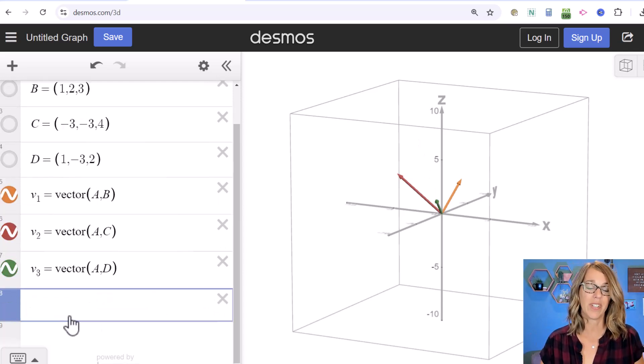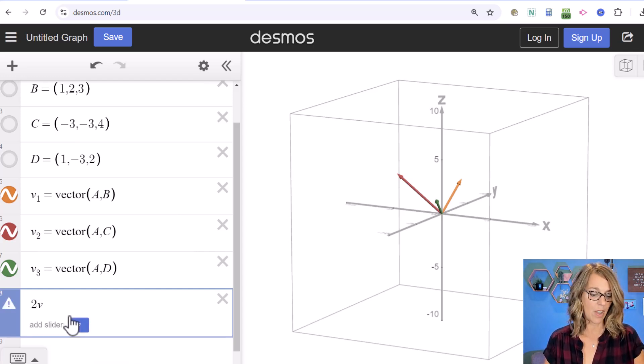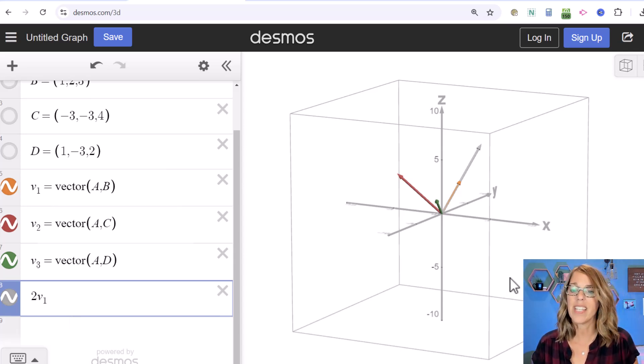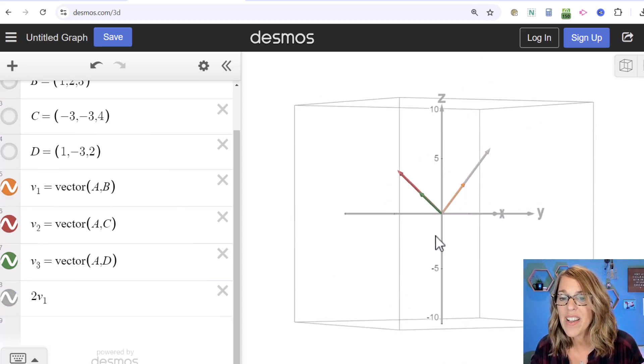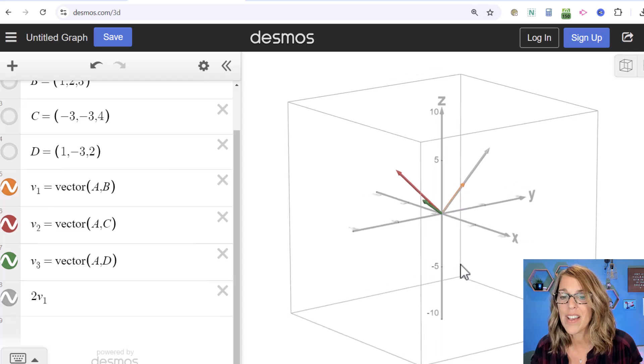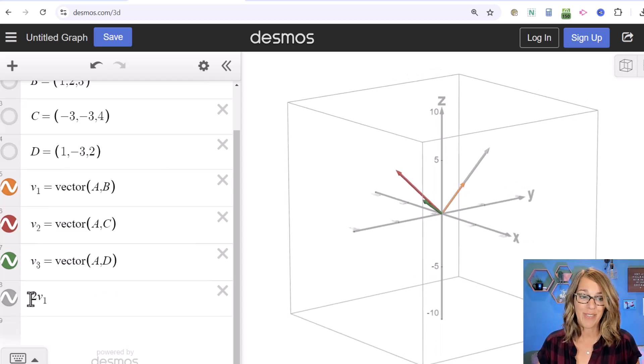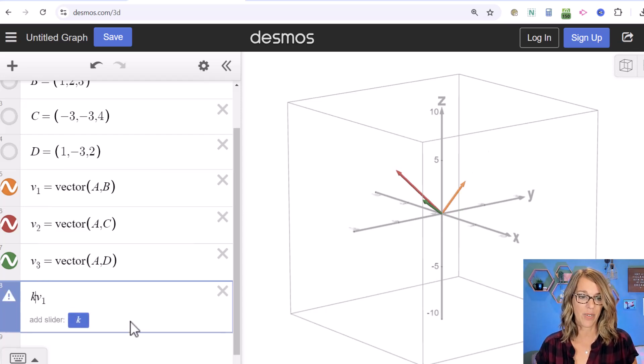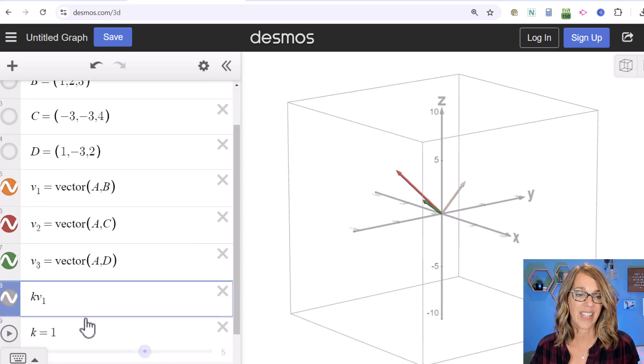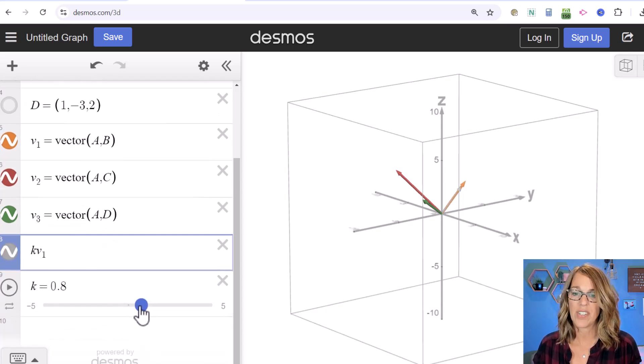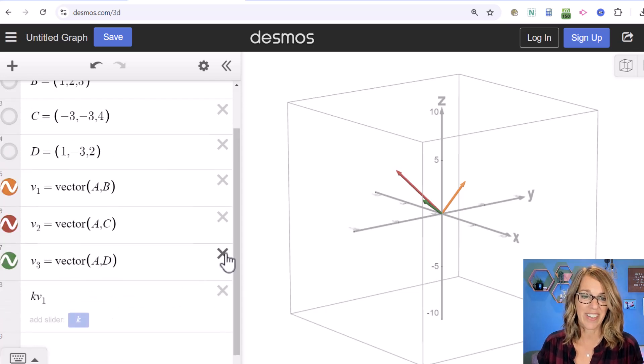I can also do scalar multiplication. Let's do 2 times v₁, and you can see that gray vector is the scalar multiple of the orange vector v₁. You can use a slider too—instead of 2, let's call this k. This is a great way to explore scalar multiples. As I change the slider, you can see it becomes negative, going in the opposite direction, then positive in the same direction.